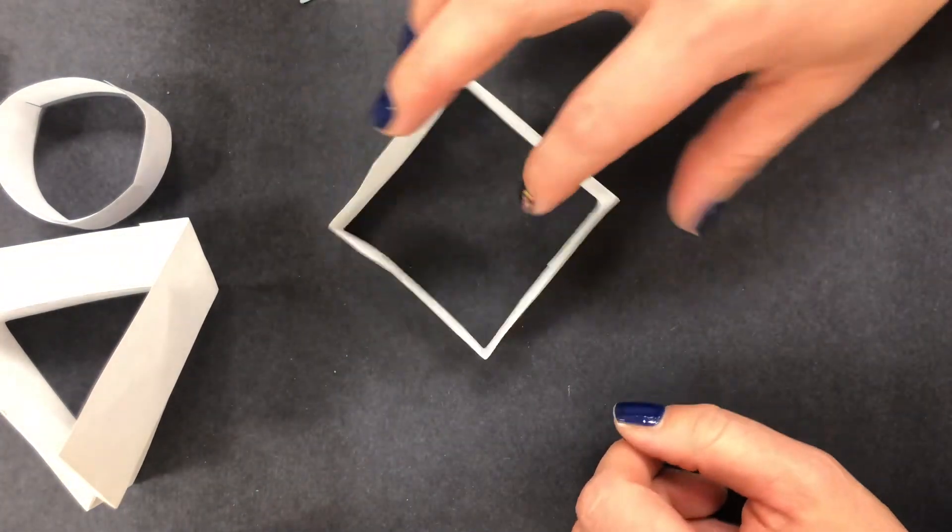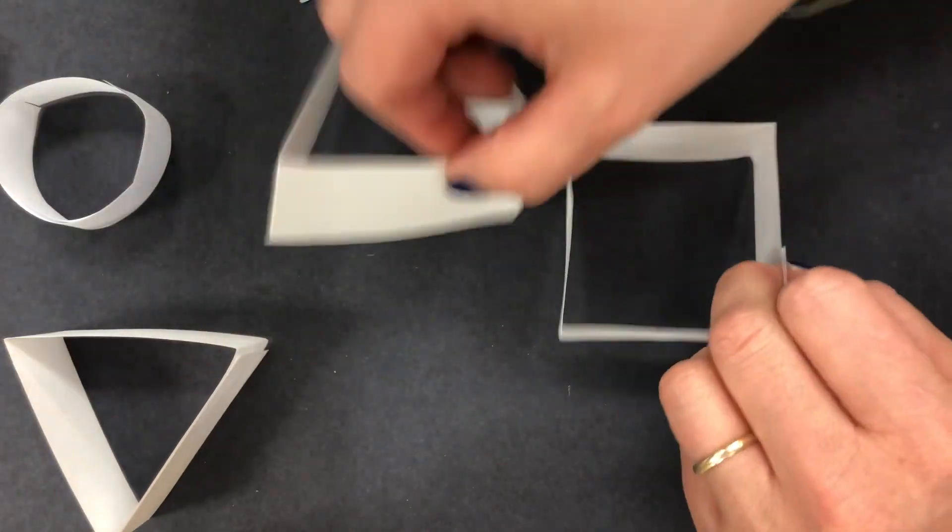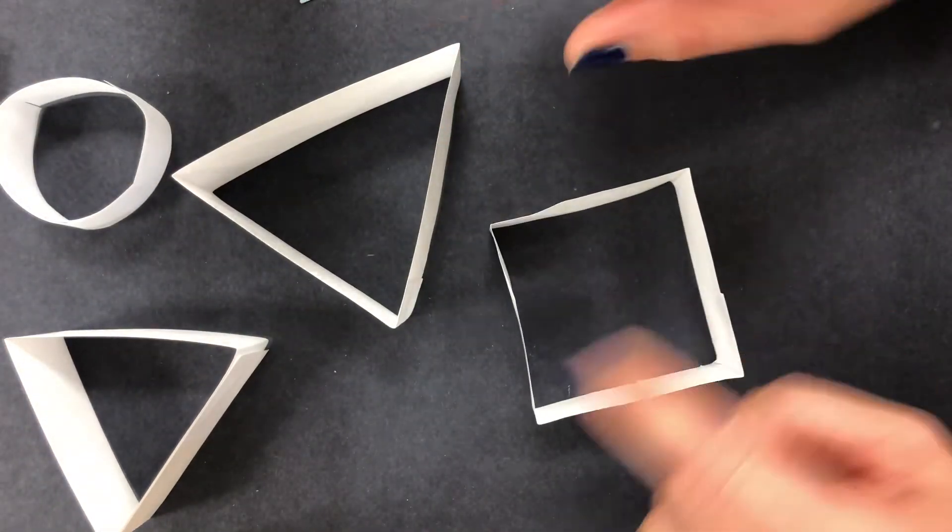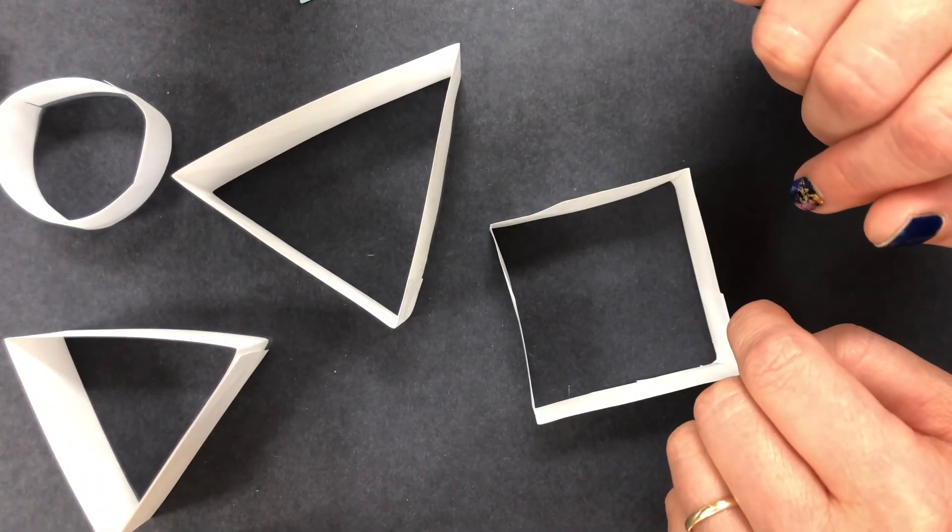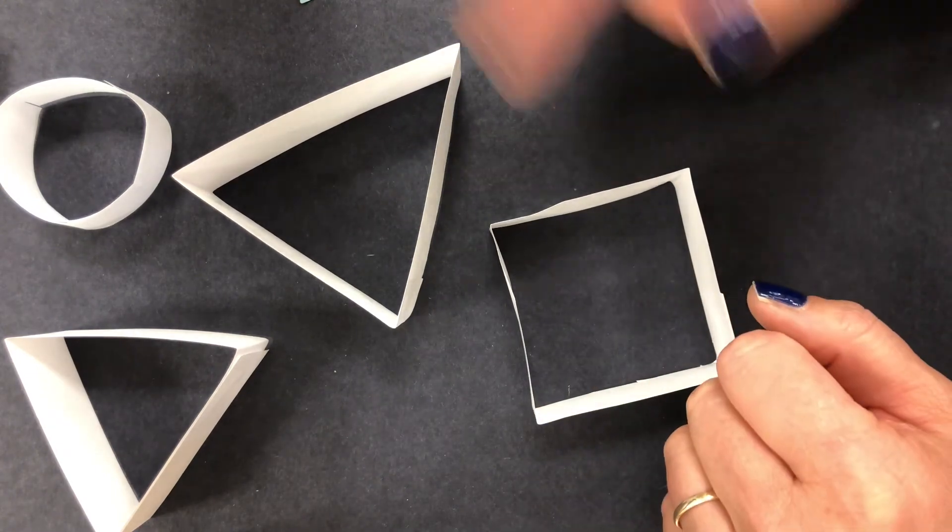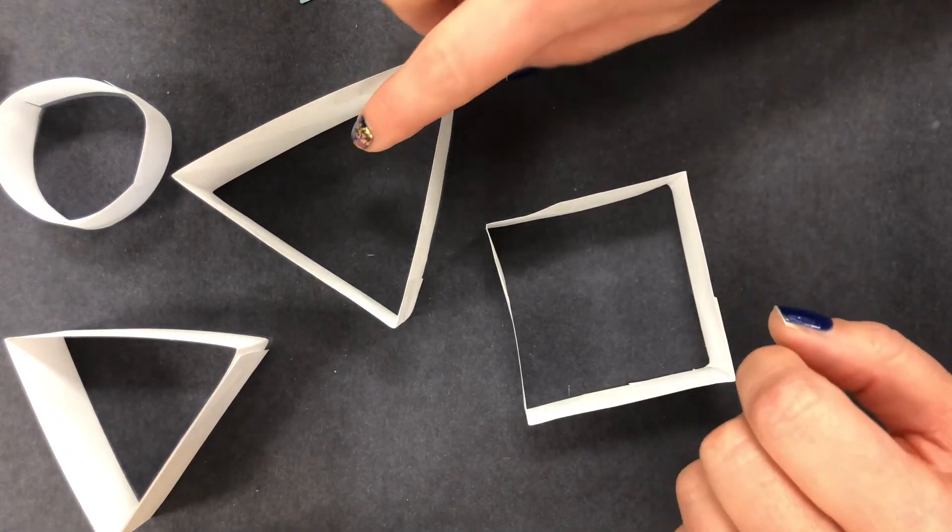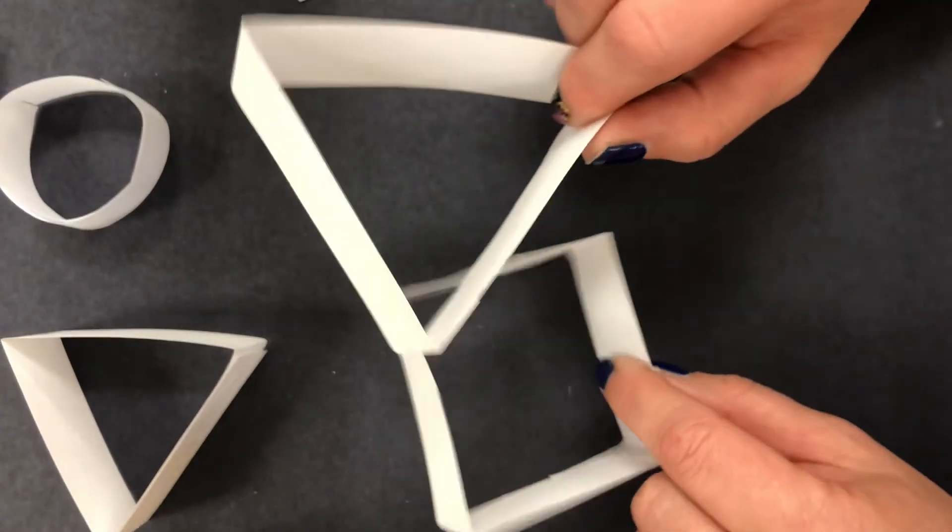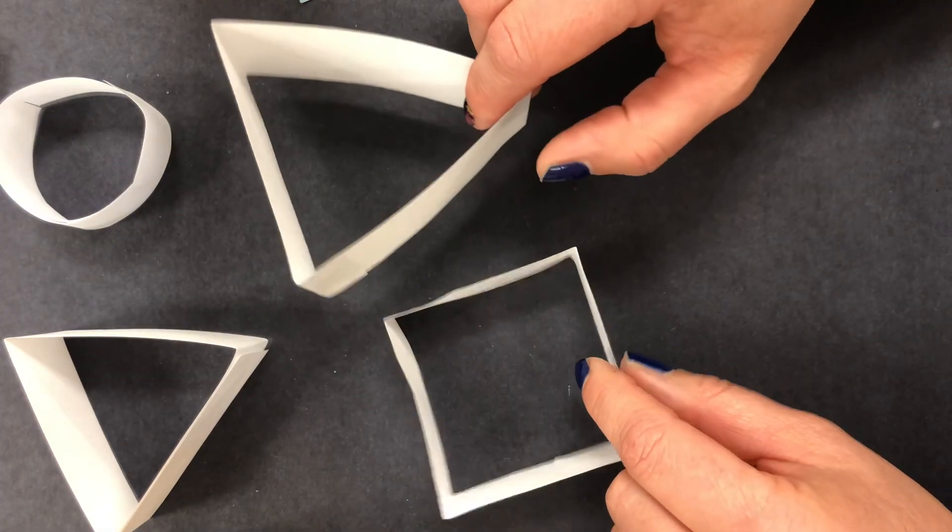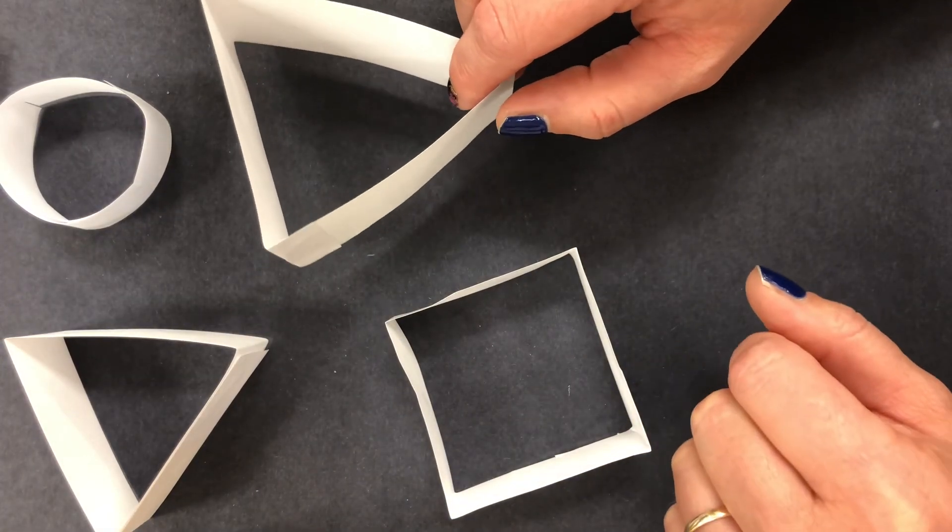And there you have it, a square. So that's how to make shapes like triangles and squares. Let's give you a moment if you need to practice doing another one you can replay the video. But that's how you make a triangle and a square. Hold on to these because you'll need them for the next tutorial which is making tabs.